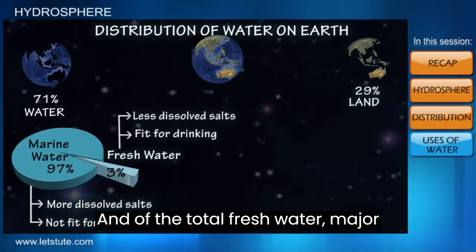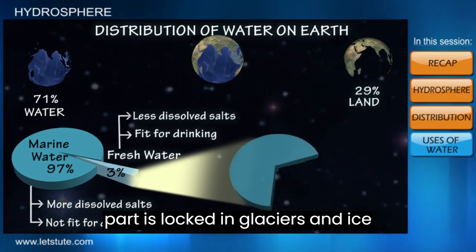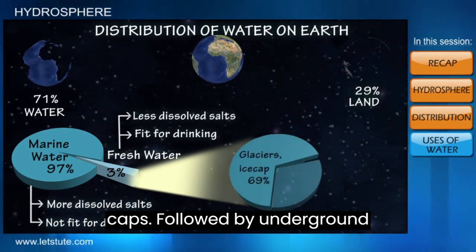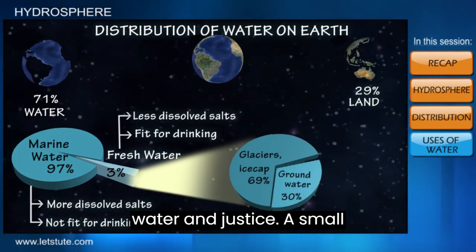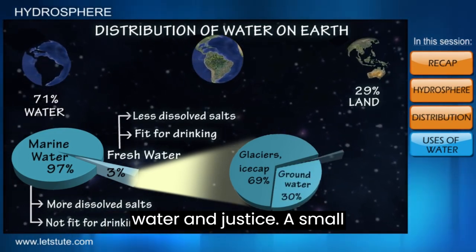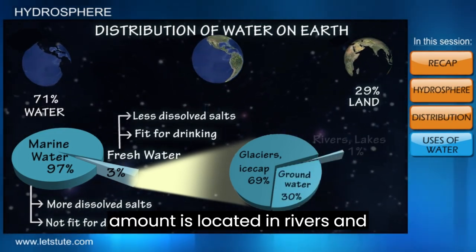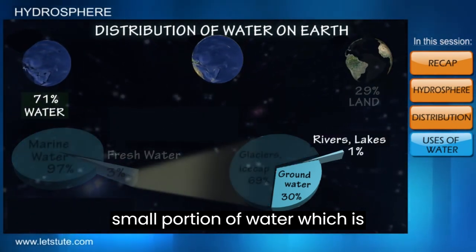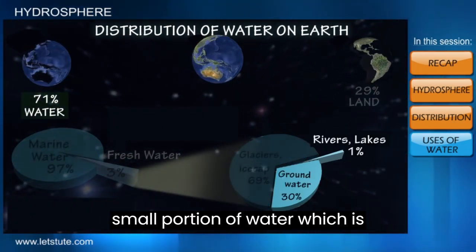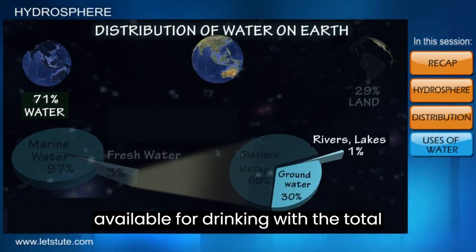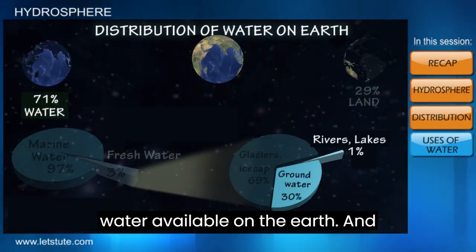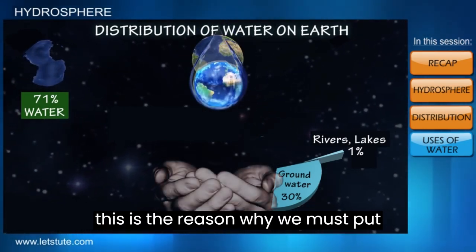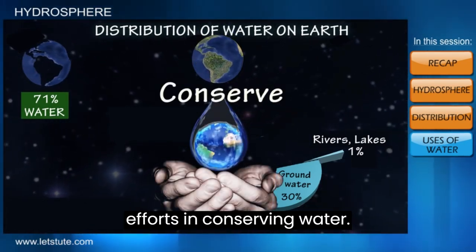Of the total fresh water, the major part is locked in glaciers and ice caps, followed by underground water, and just a small amount is located in rivers and lakes. We can compare this small portion of drinkable water with the total water available on Earth, and this is why we must put efforts into conserving water.